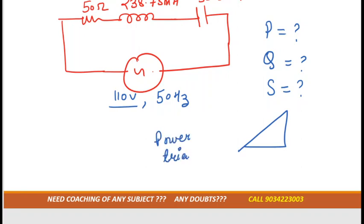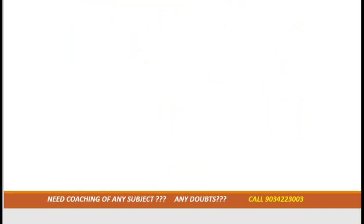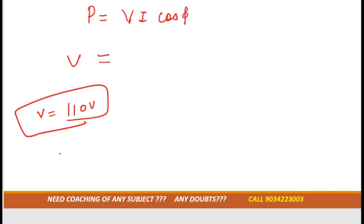First of all we should know the formulas. For the active power, that is VI cos phi. For that we should know voltage. Voltage is given, that is 110 volt. Current they don't mention and cos phi also they don't mention, but for the calculation of active power we should calculate current first.